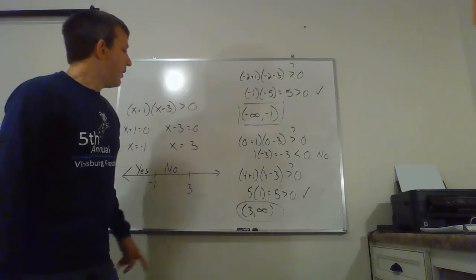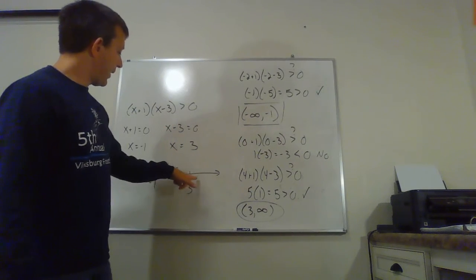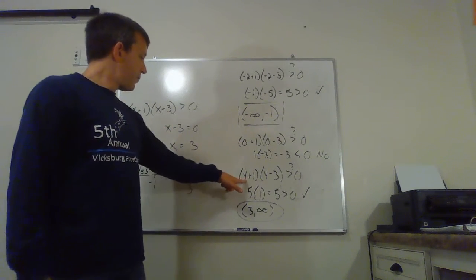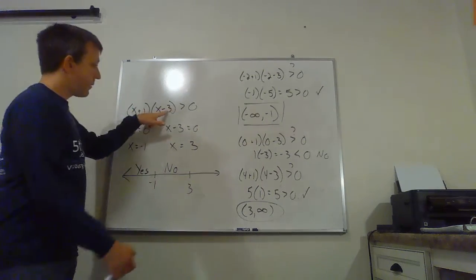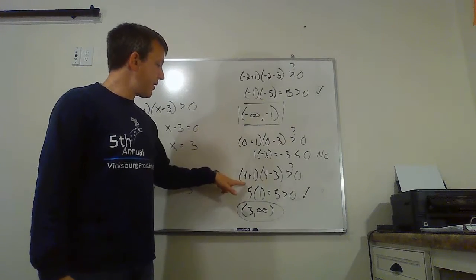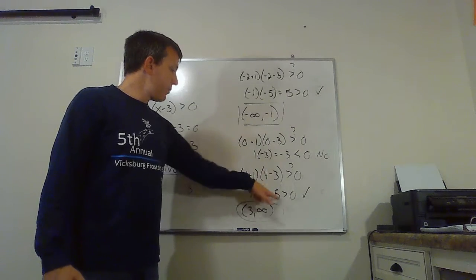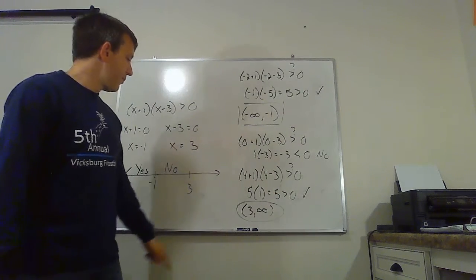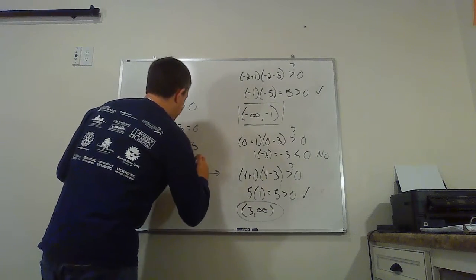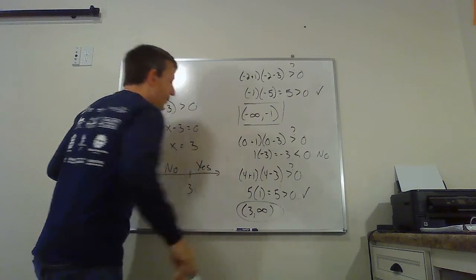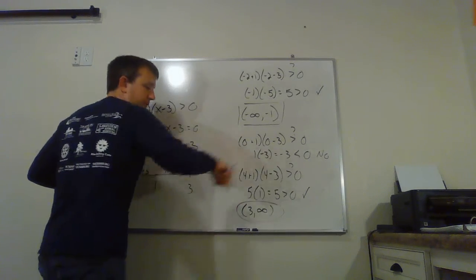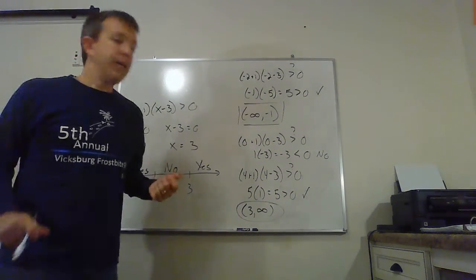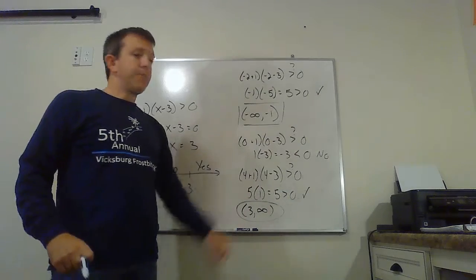The last one, I needed a point out to the right of three. I chose four because why not? Four plus one times four minus three is bigger than zero. In this case, we get five times one, which is five. That is greater than zero. So that interval works. And then I wrote out that interval. It starts at three, goes forever out to the right towards positive infinity. So we get the interval from three to positive infinity.